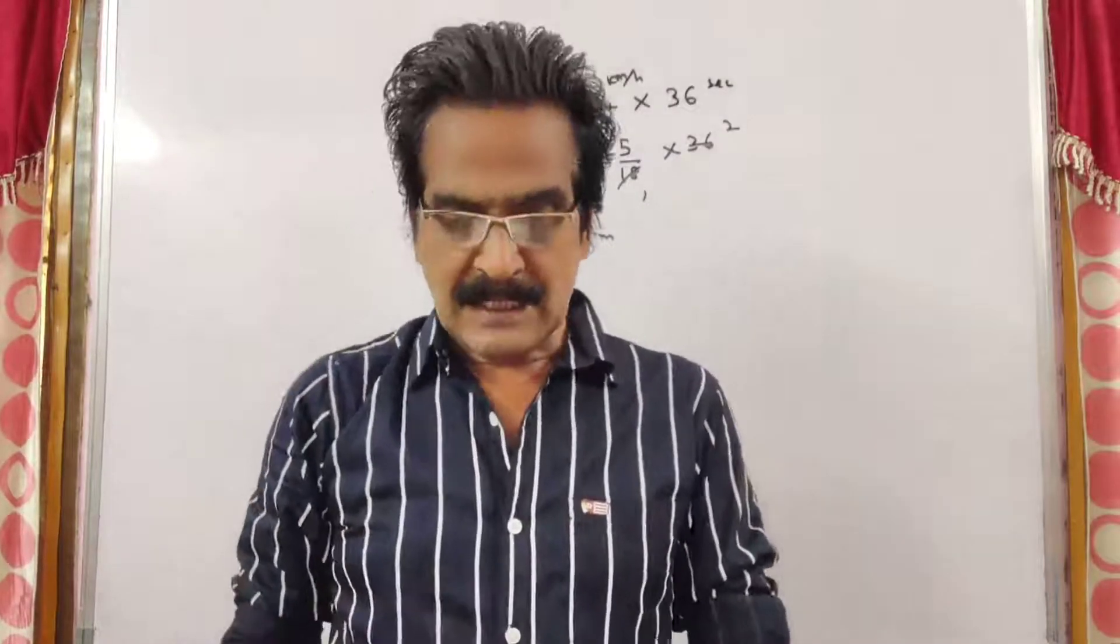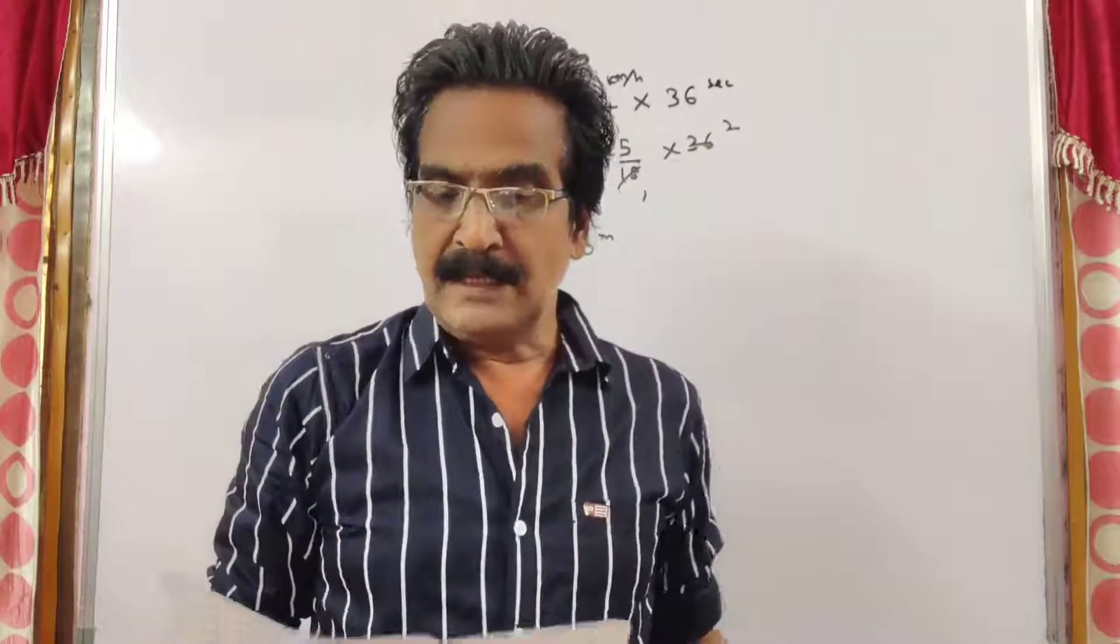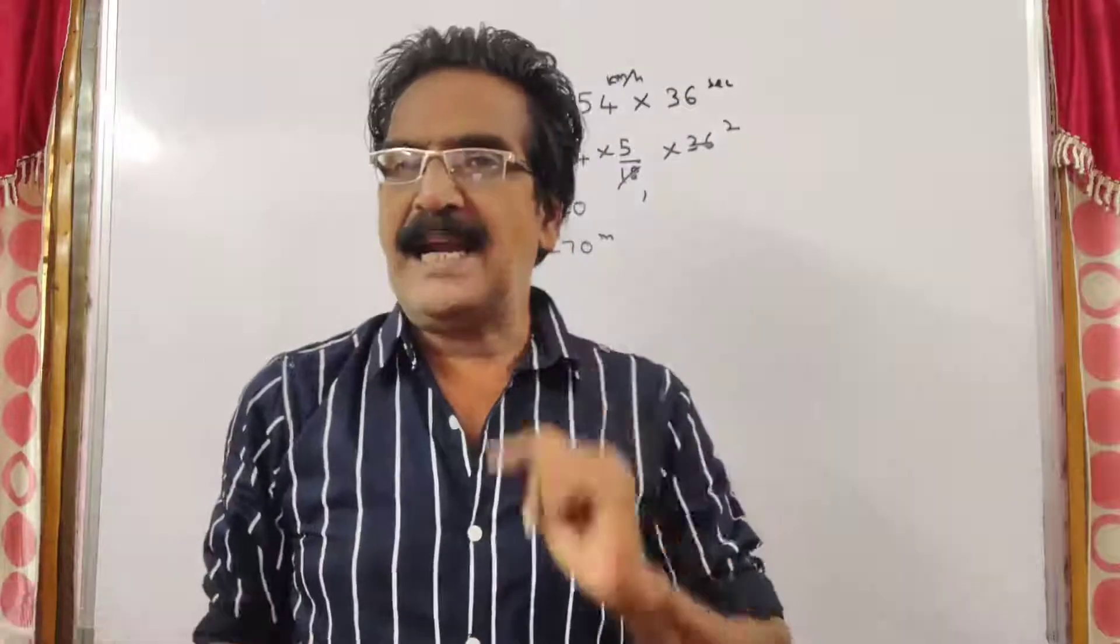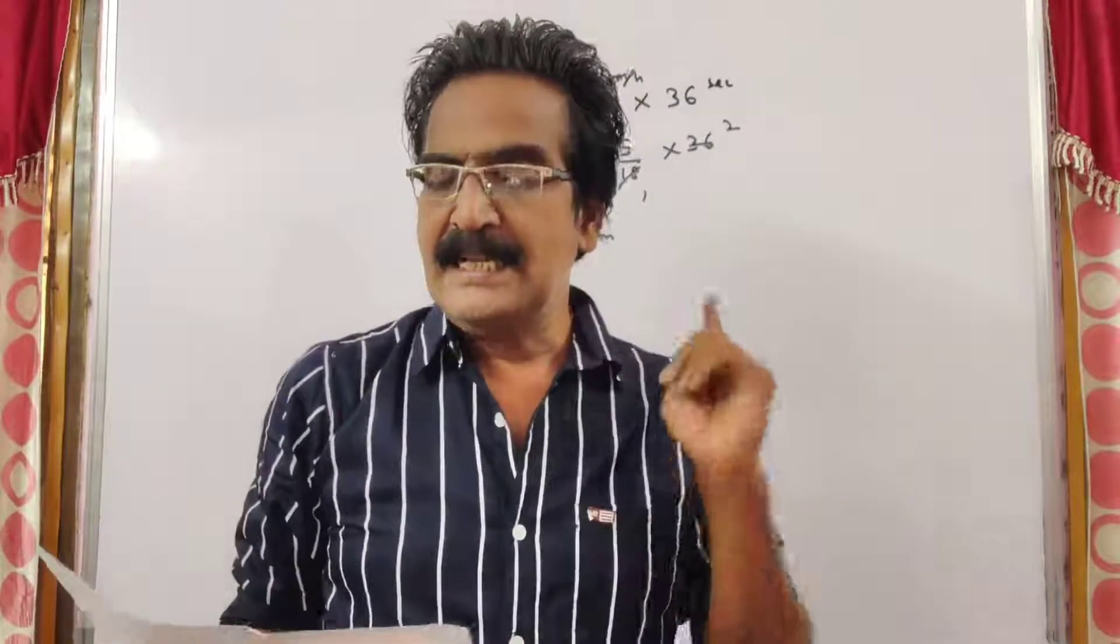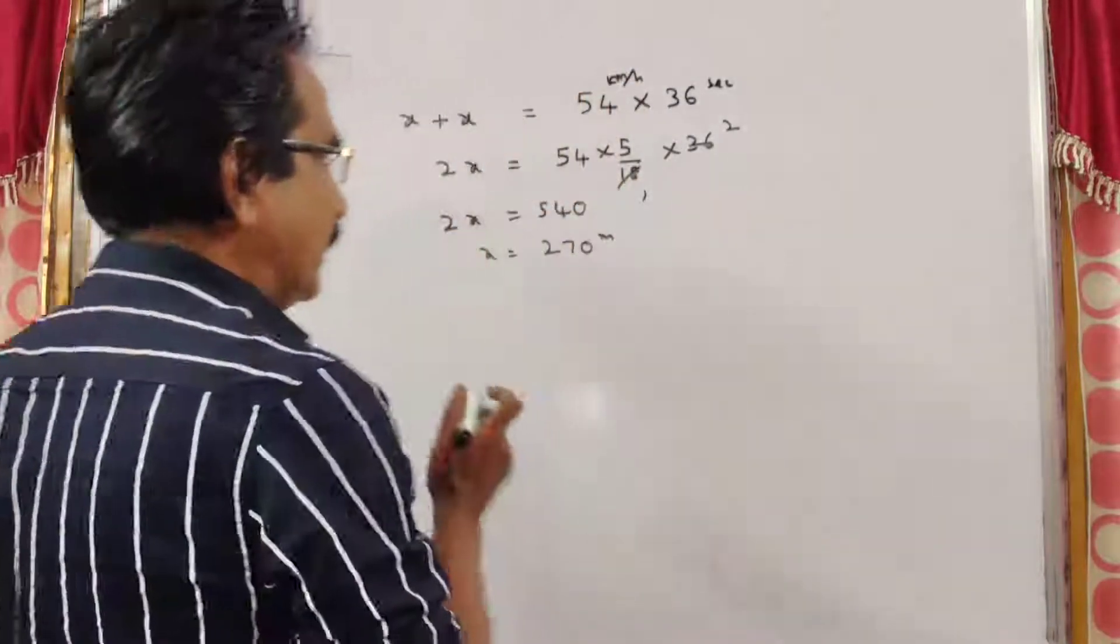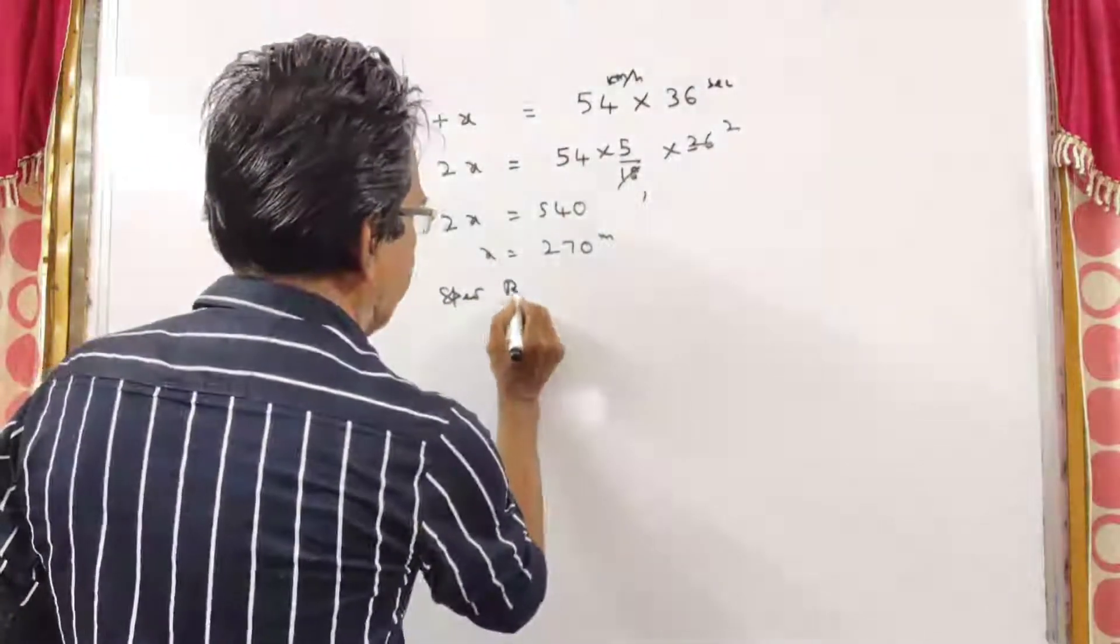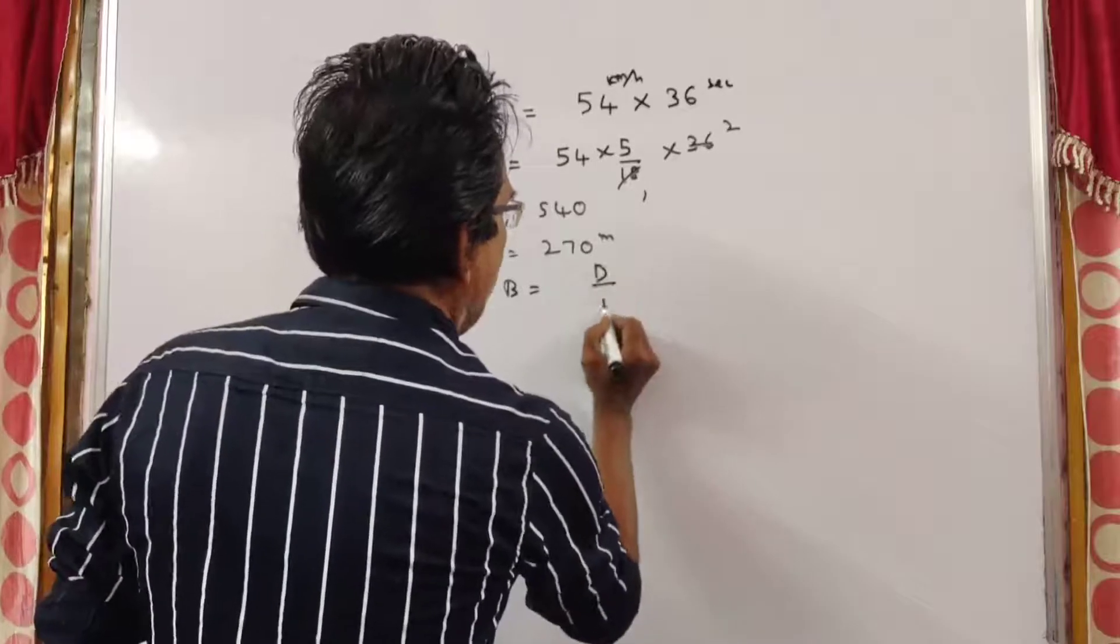Now, see what is the question? Train B, which is 230 meters long, crosses the same platform in 25 seconds. The speed of train B is equal to distance by time.